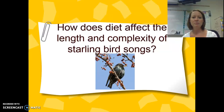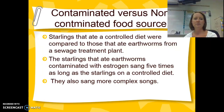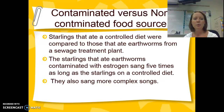Here's another example. We're going to look at how diet affects the length and complexity of bird songs. Starlings that ate a controlled diet were compared to those that ate earthworms from a sewage treatment plant. The starlings that ate the earthworms contaminated with estrogen sang five times as long as the starlings on the controlled diet, and they also sang more complex songs. What would be our independent variable? What would be the dependent variable? And what controls were in place?